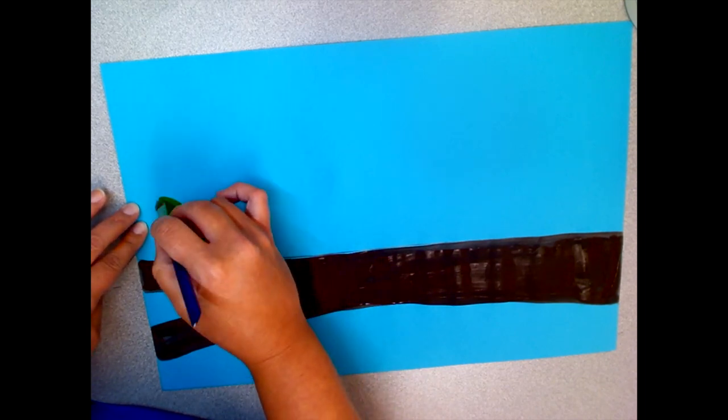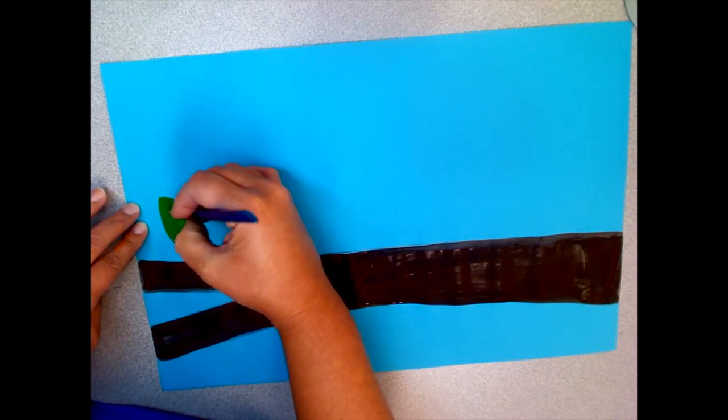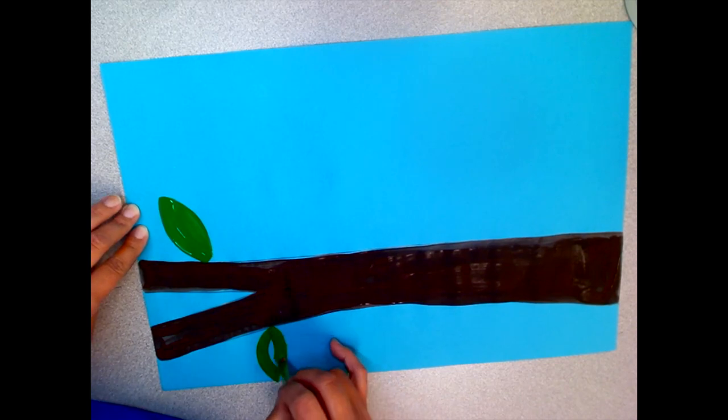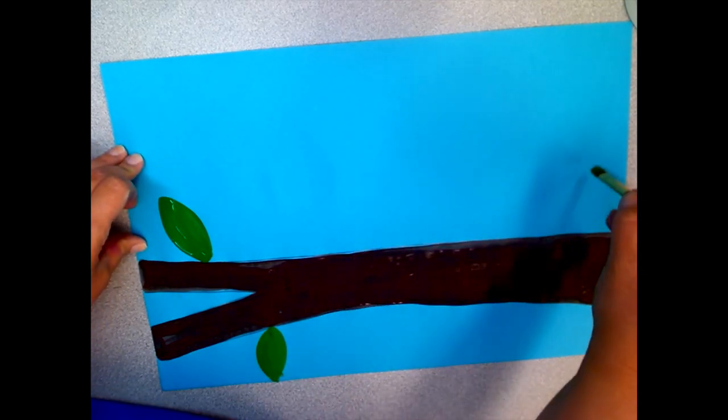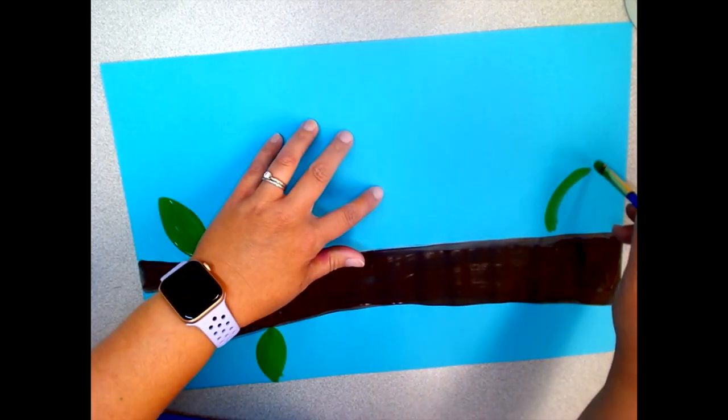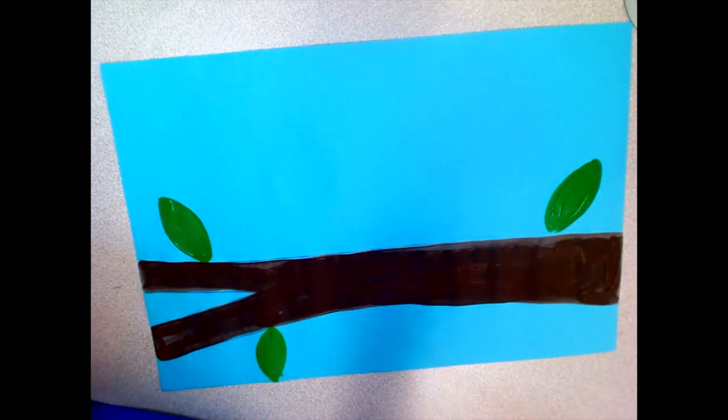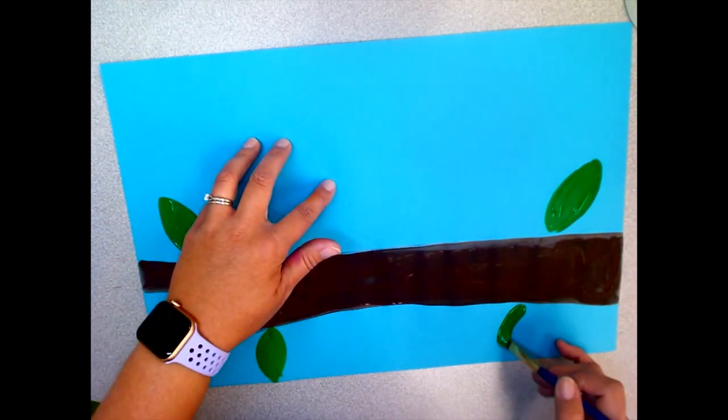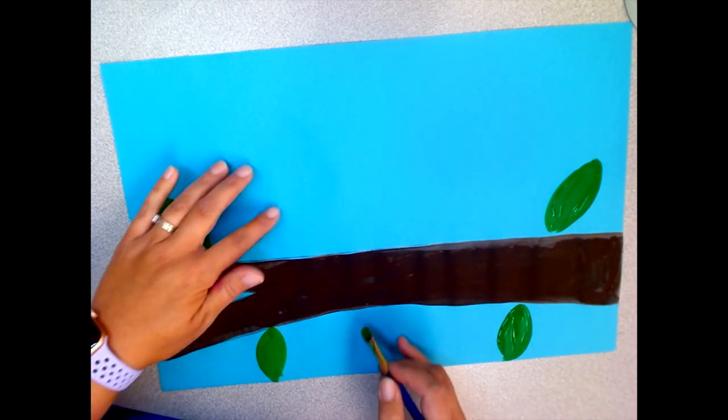Make sure that when you make your leaves, you put them where you're not going to lay your caterpillar next time you have art. If you put your leaves where your caterpillar is going to stand, you won't be able to see them. So put them on the ends of your branch and underneath your branch so that you can see them.